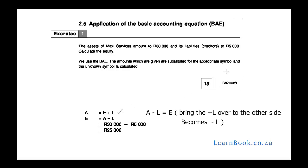Assets equals owner's equity plus liabilities. We need to calculate equity. We know the assets, which are given at $30,000, and we know the liabilities, which are given at $5,000. We need to work out the equity. In order to do that, we have to use a mathematical formula.